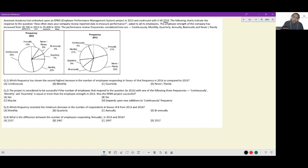The performance review frequencies considered here are continuously, monthly, quarterly, annually, biannually, and never really. So we have six responses for these two years and we have percentage figures given to us in two pie charts. Comparison of pie chart is the only scale we need.